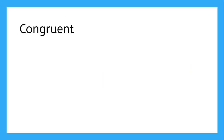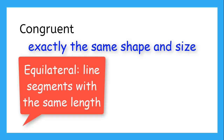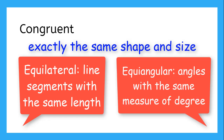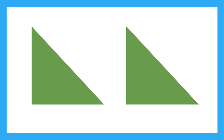We've been using the word congruent a lot. Remember, congruent means exactly the same. We've been using words like equilateral to talk about line segments that are the same length, and equal angular to talk about angles that are the same measure of degree. But we can apply the word congruent to entire shapes. When two figures are exactly the same size and shape, they are congruent.